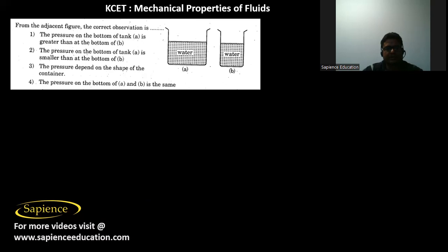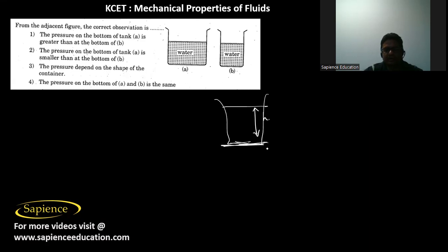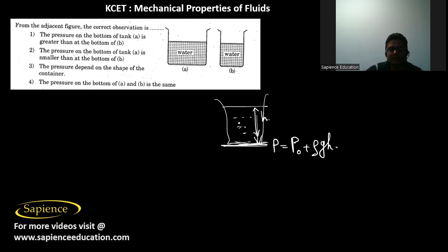As we know, irrespective of the shape of the container, if the liquid is the same and the height of the liquid column is also the same, then the same pressure will be exerted at the bottom. The pressure at the bottom depends only on the height of the liquid column. The pressure at the bottom will be P₀ + ρgh, where ρ is the density of the liquid, h is the height of the liquid column, g is acceleration due to gravity, and P₀ is the atmospheric pressure.